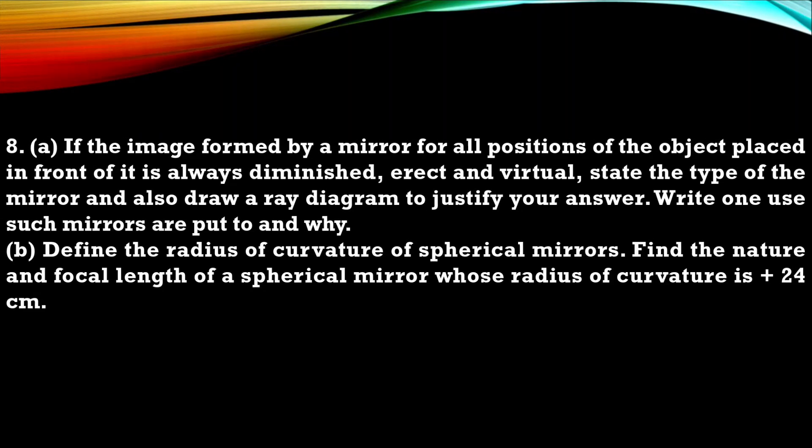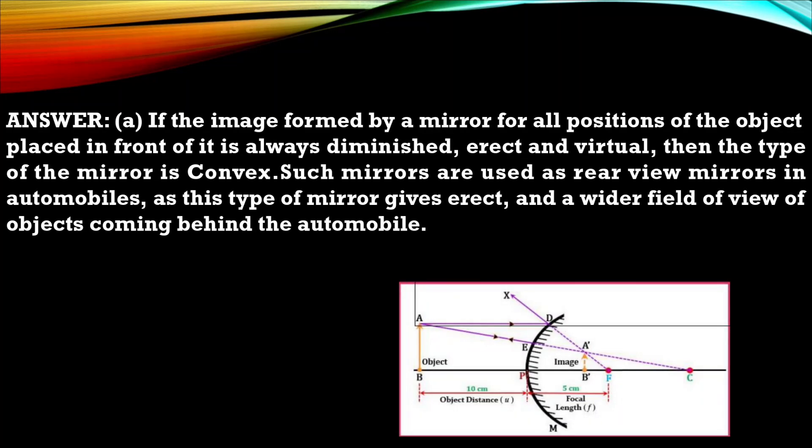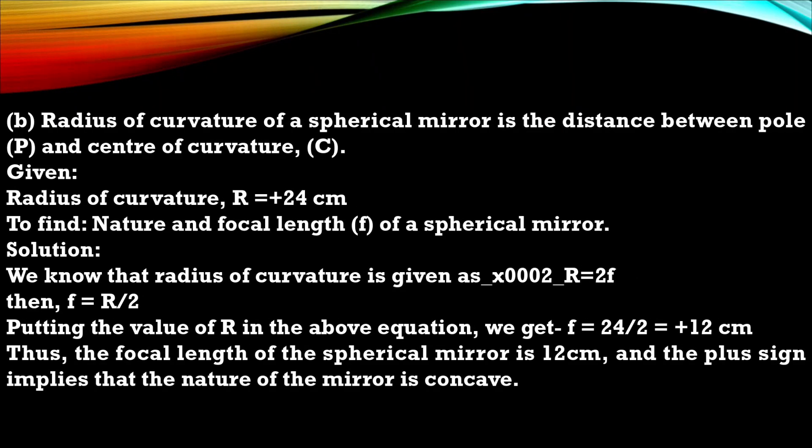Question 8. If the image formed by a mirror for all position of the object placed in front of it is always diminished, erect and virtual, state the type of mirror and also draw a ray diagram to justify your answer. Write one use of such mirror. B. Define the radius of curvature of a spherical mirror. Find the nature and focal length of a spherical mirror whose radius of curvature is plus 24 centimeter. So this is the answer for A part with ray diagram. Make sure your ray diagram you are drawing with pencil and you are using your scale and compass. Next B solution with numerical and make sure in numerical you are writing given, then you are writing the formula and then you are solving it. Don't directly solve your answer.